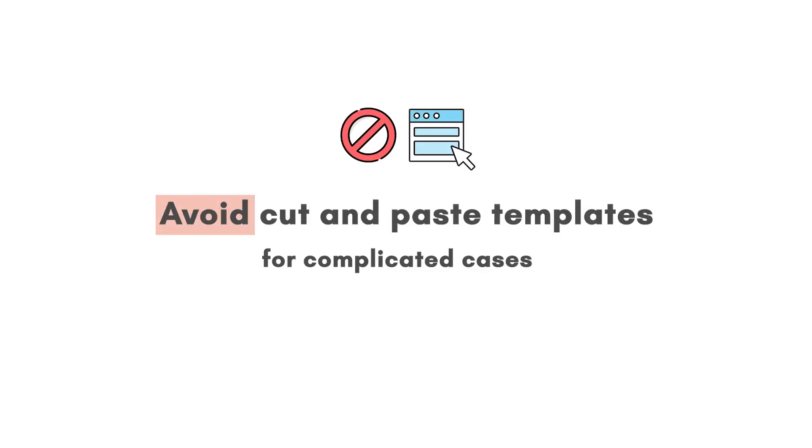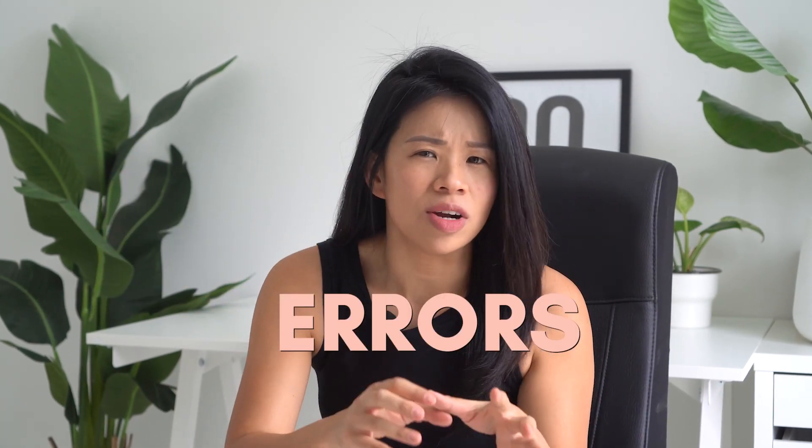The first tip is simple: avoid cut and paste templates for complicated patient complaints. It is one thing to use a quick physical exam template for a URI or a UTI, but you cannot do a pre-filled exam for a chest pain or abdominal pain patient because these complaints require more detailed HPI and they likely involve multiple organ systems. In my experience, cut and paste templates tend to have a lot of errors, and these errors are very easy to identify in the SOAP note.